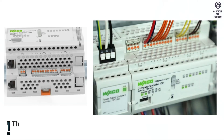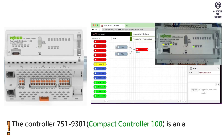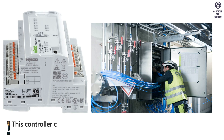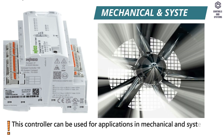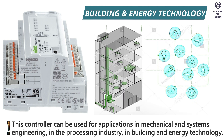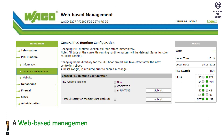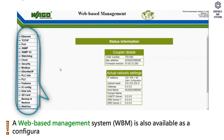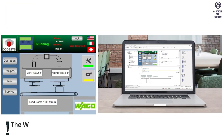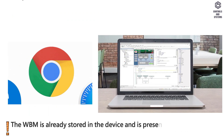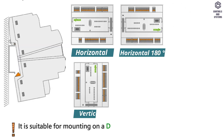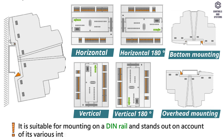Device Overview: The WAGO Compact Controller 100 is an automation device that can perform control tasks of a PLC. This controller can be used for applications in mechanical and systems engineering, in the processing industry, in building and energy technology. A web-based management system is also available as a configuration aid. This system includes various dynamic HTML pages. The WBM is already stored in the device and is presented and operated using a web browser. It is suitable for mounting on a DIN rail and stands out on account of its various interfaces.